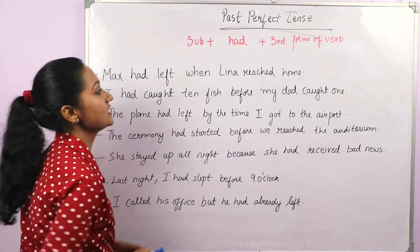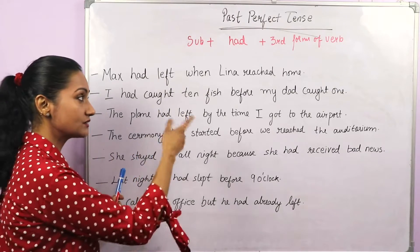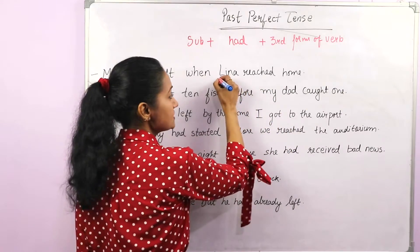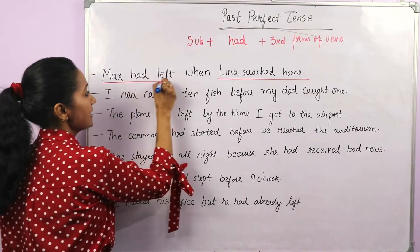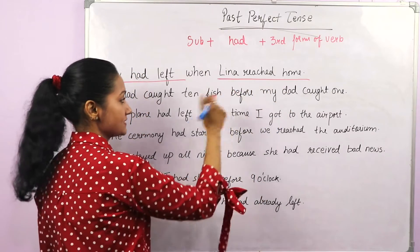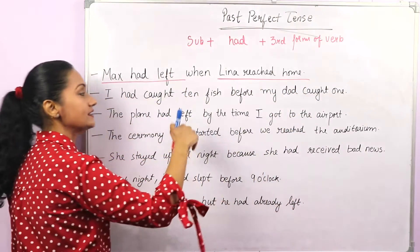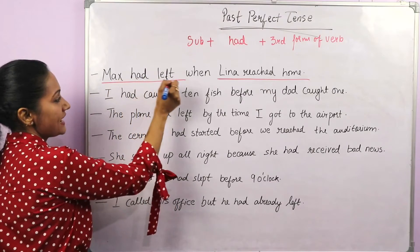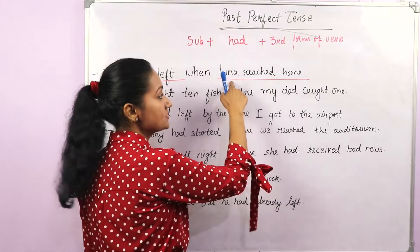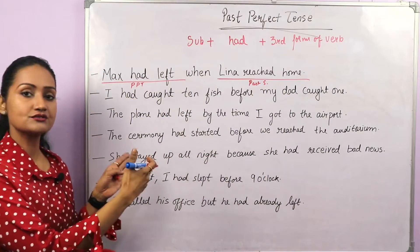Next example: 'Max had left when Lina reached home.' Both actions happened in the past, but what happened first? First, Max had left. Then Lina reached home — that is the later action. The later action should be in past simple, and the earlier action in past perfect. So 'Lina reached home' is subject plus second form of the verb — past simple. And 'Max had left' is subject plus 'had' plus third form of the verb — past perfect.